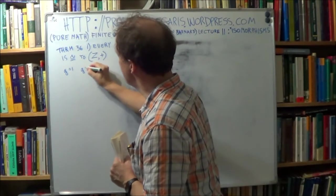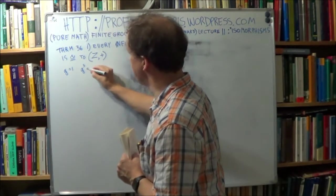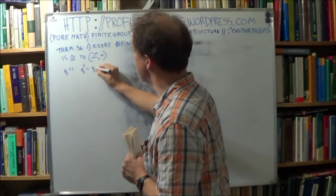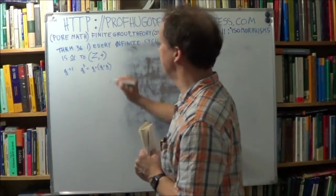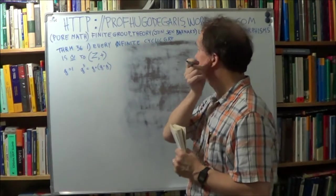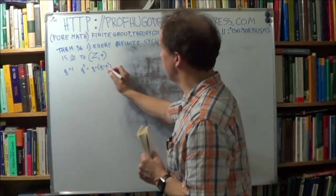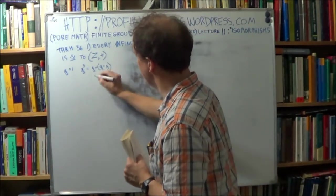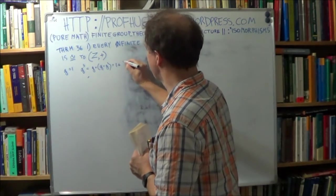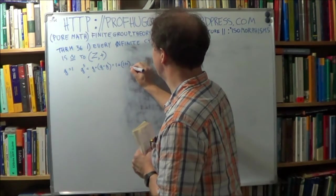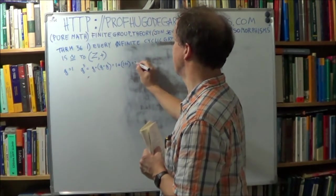So g is just one, okay? So what would g cubed be? Now, that's just shorthand, remember, it's the same as this. Okay? It's just shorthand for this. And now, the binary operator is plus, so this is one plus one plus one, and that's three, that gives you three.